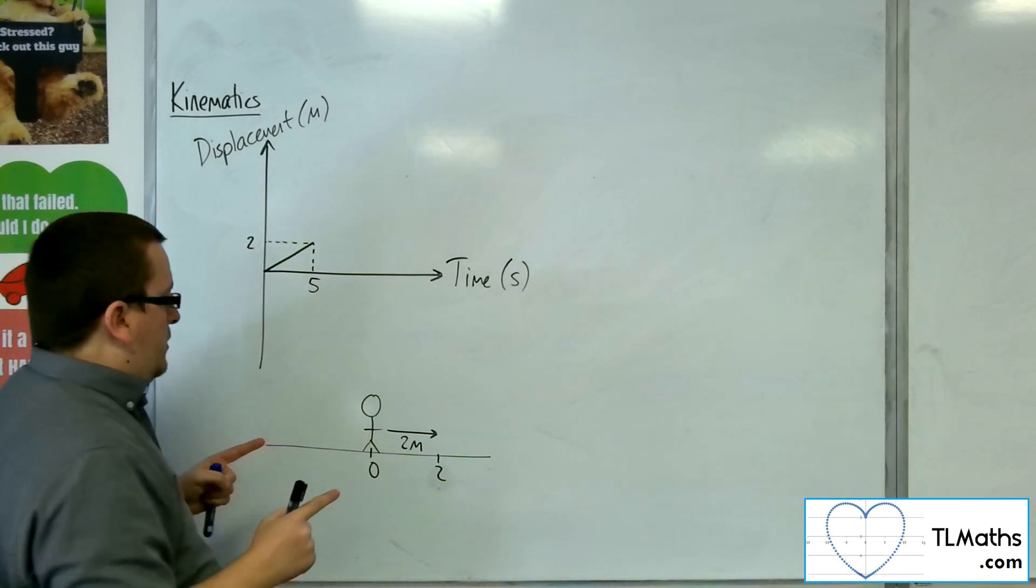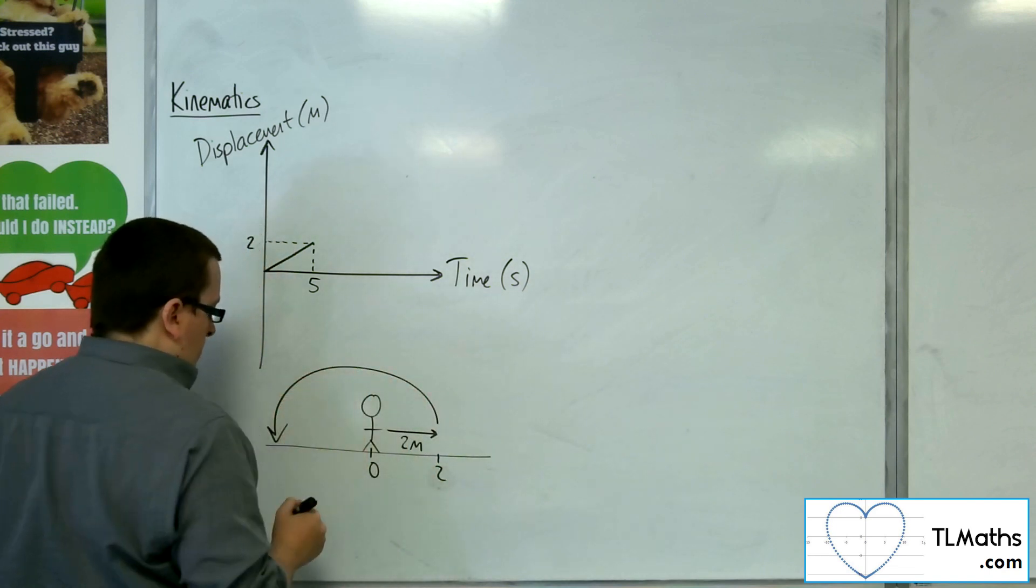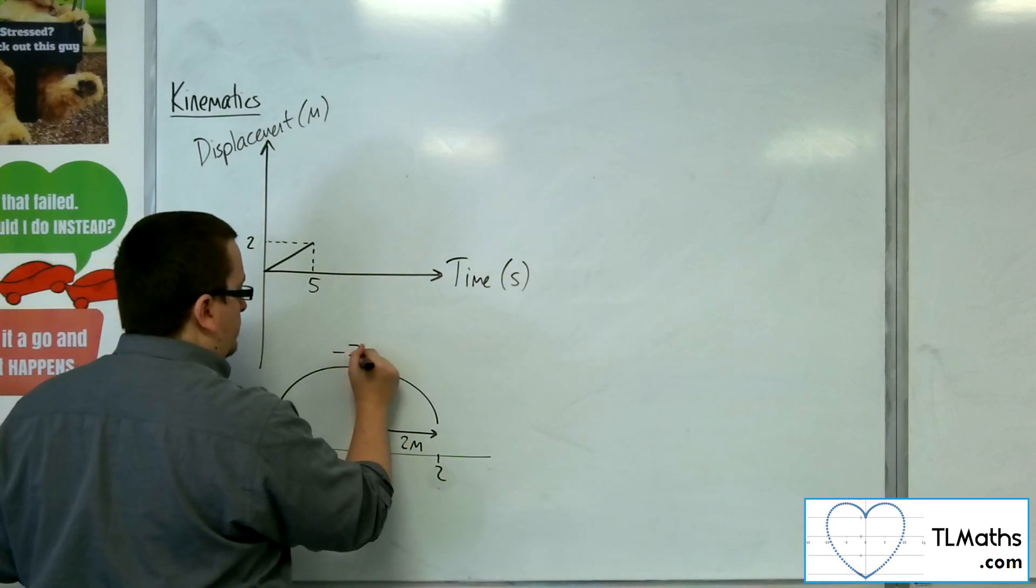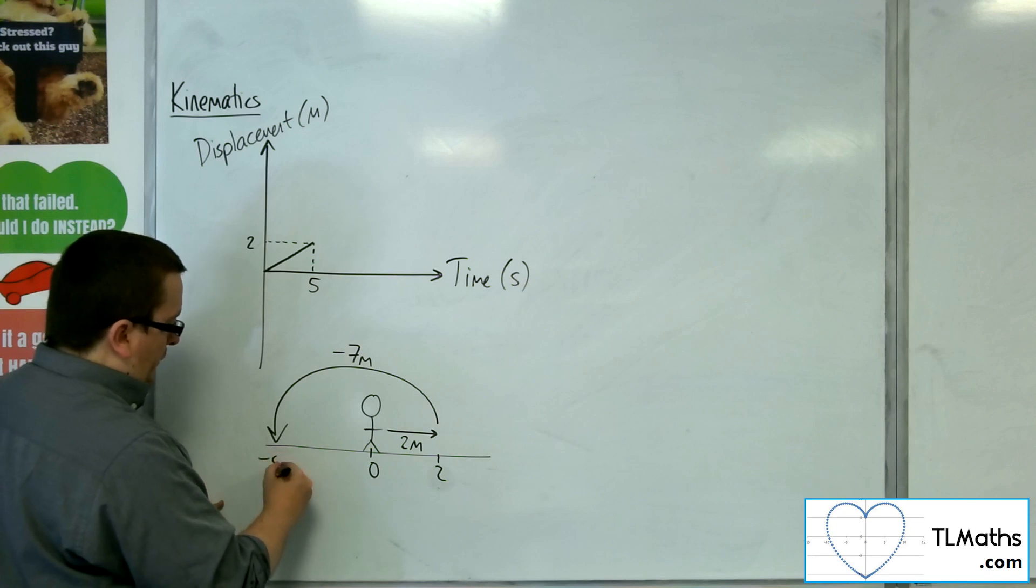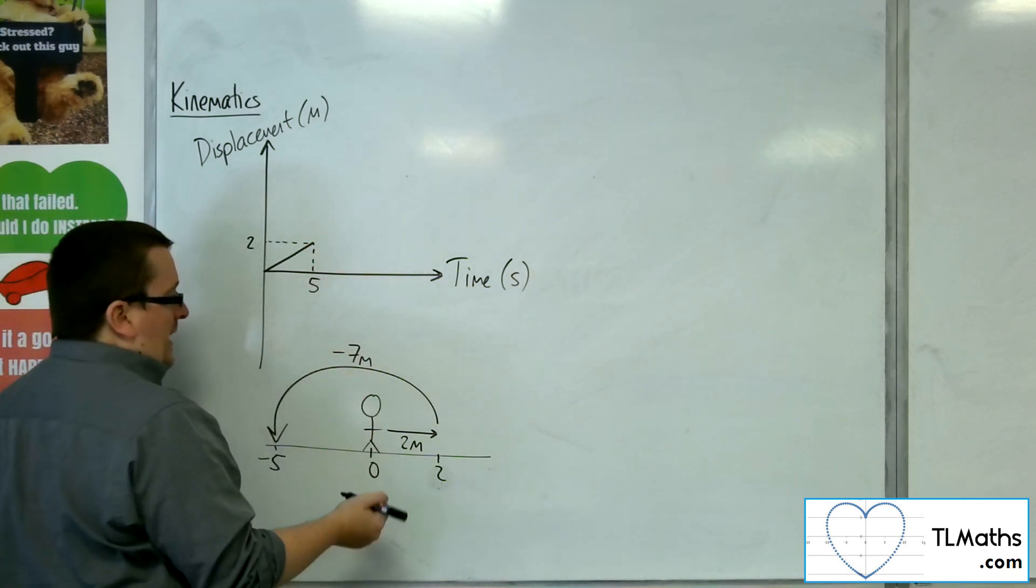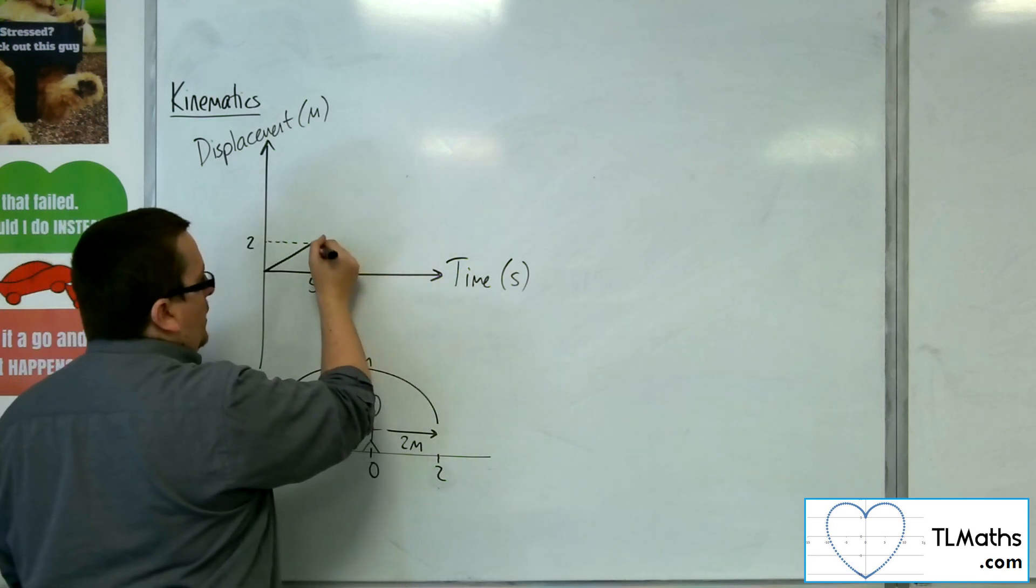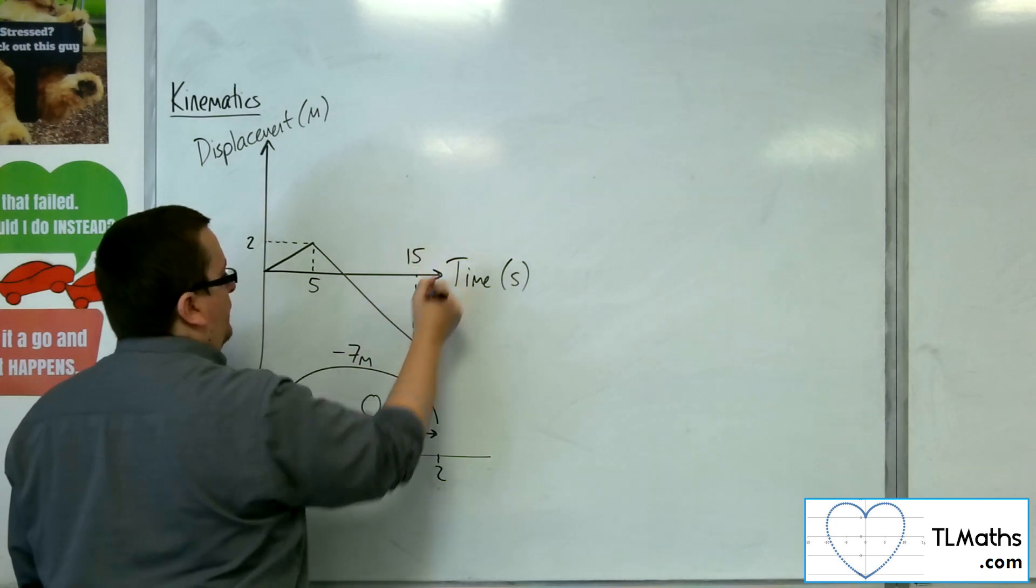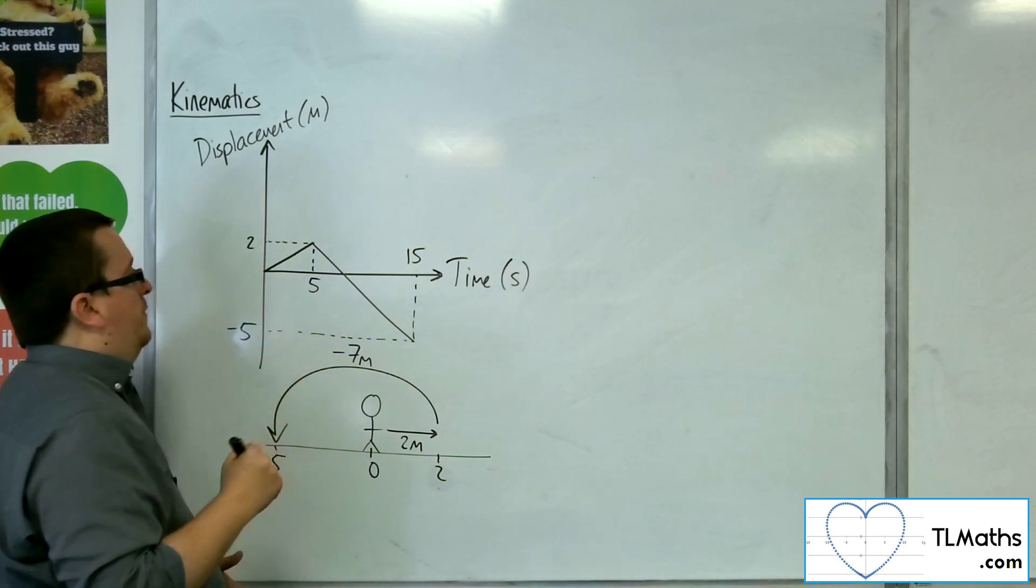And then what they do is they then walk back, and they then travel seven metres this way in order to get back to minus five, that position there. So, then let's say that that takes a further ten seconds. So, we would be looking at... There's now 15. And we'd now be at minus five.